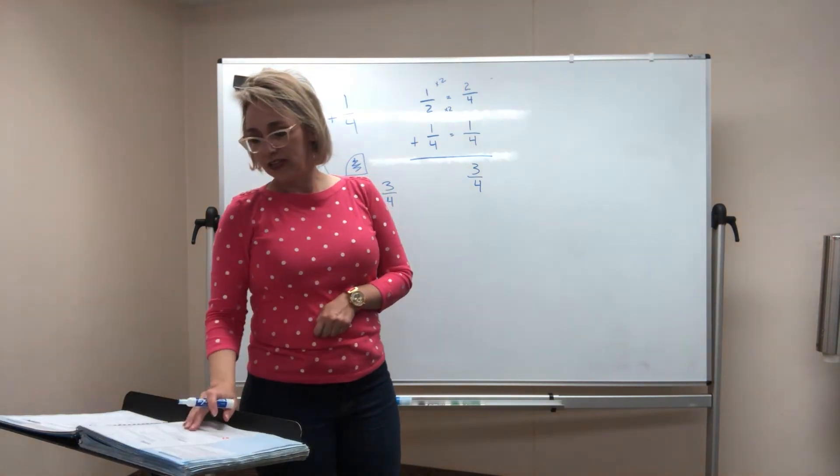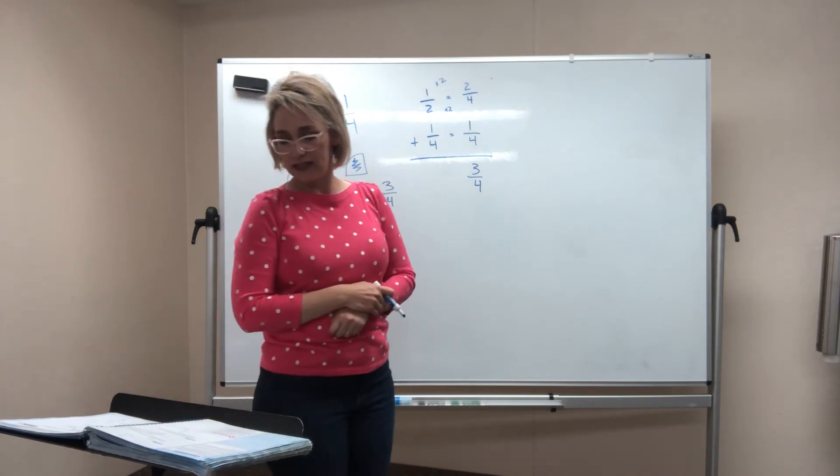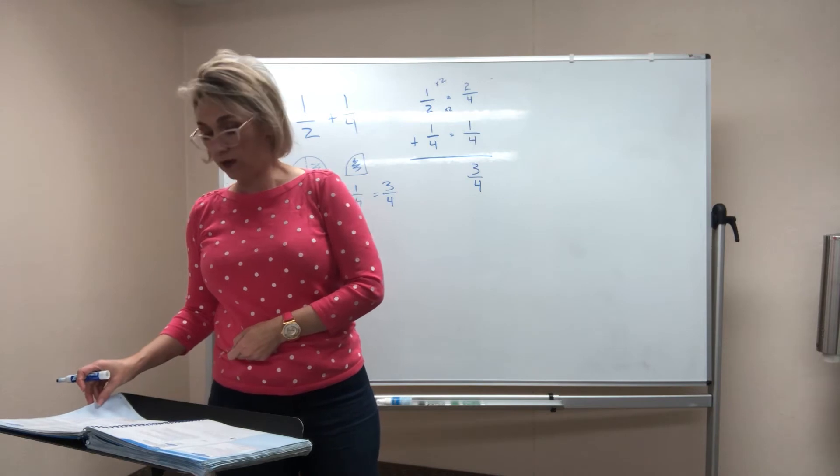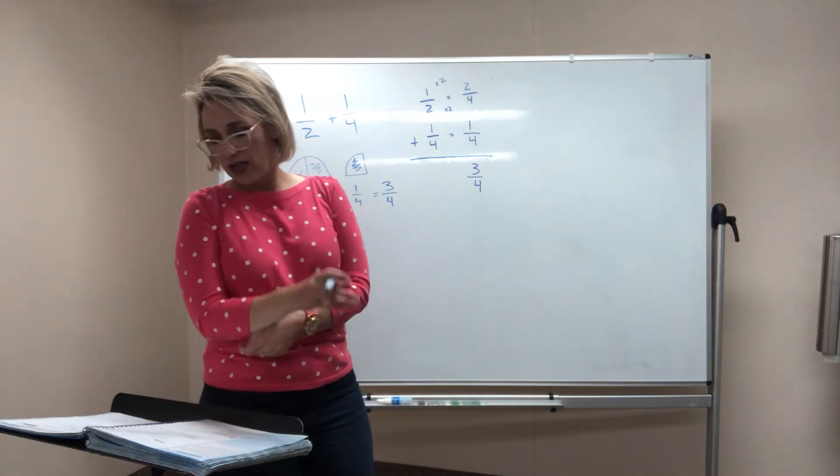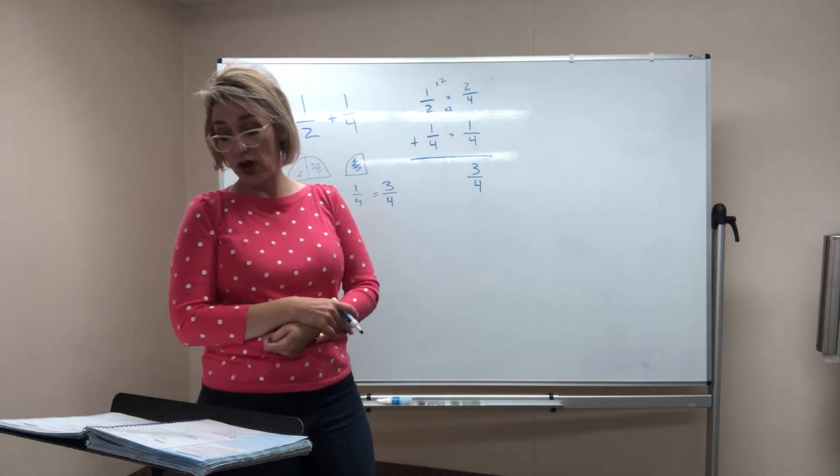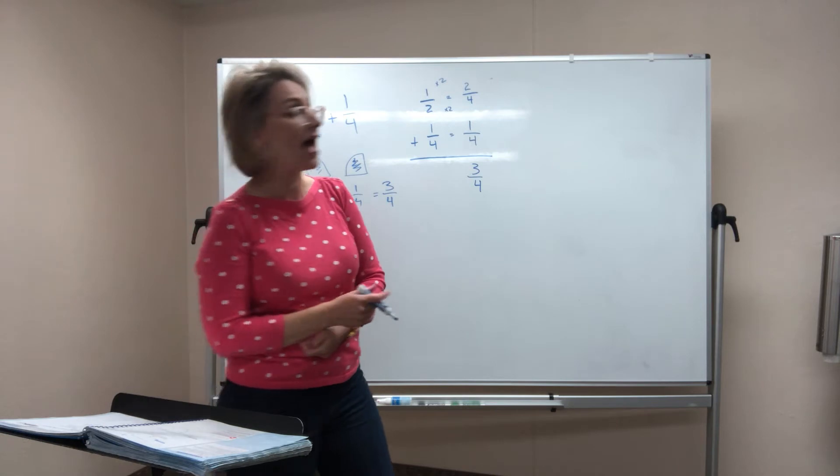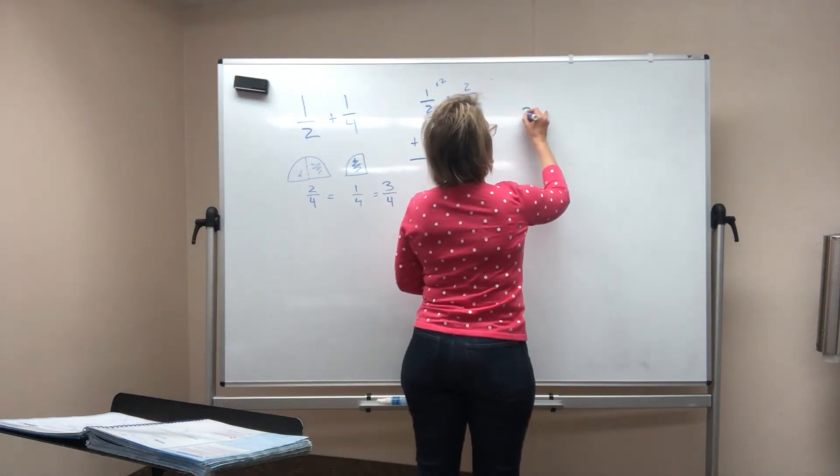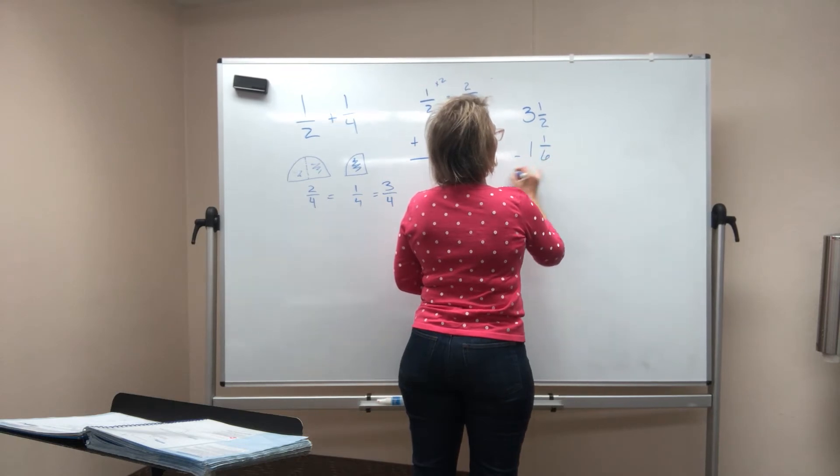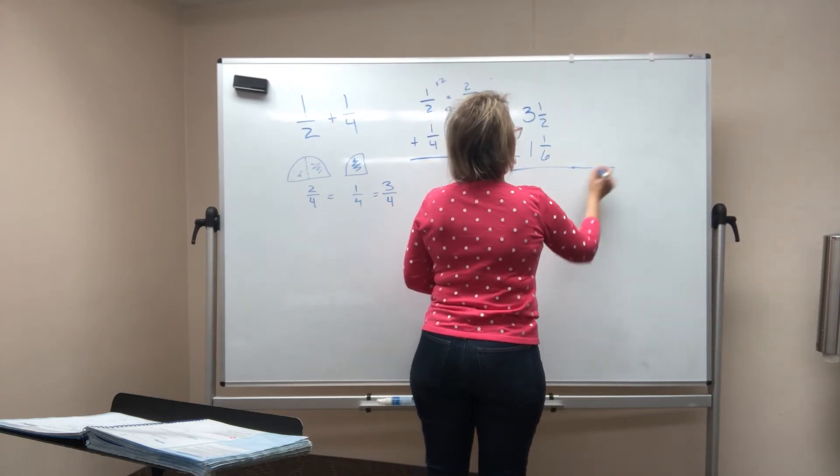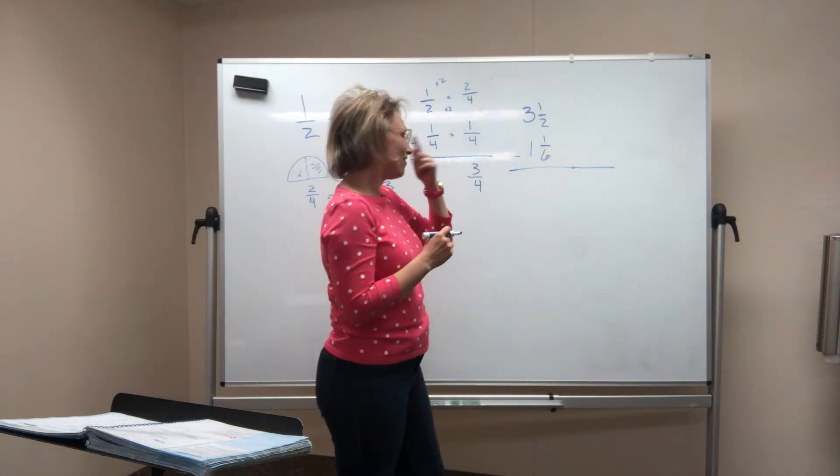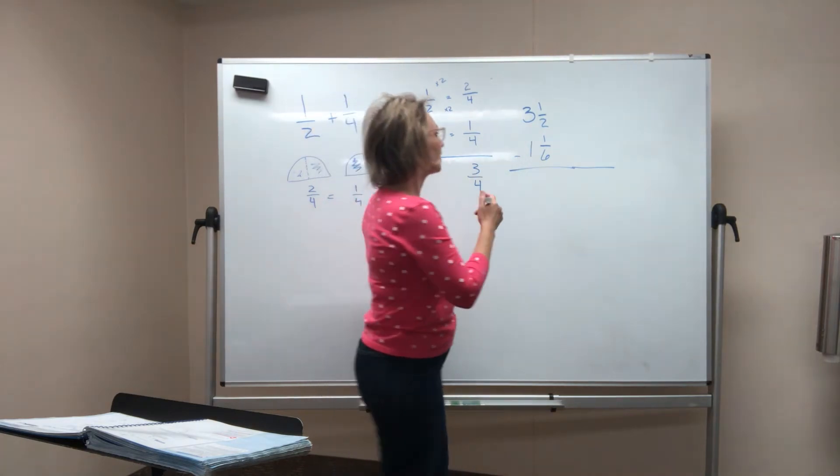Now let's do another one. I'm looking at example, the one we did was actually example two on page 761. Example three says subtract three and a half. We're going to subtract one and one sixth from three and a half. So here's the problem. We have three and one half, and we want to take away from it one and one sixth. I can't take six out of halves. It just doesn't work. I've got to chop my halves up into smaller pieces.